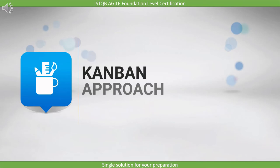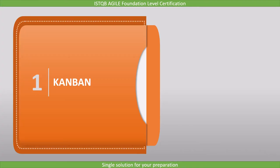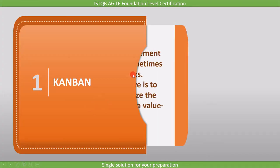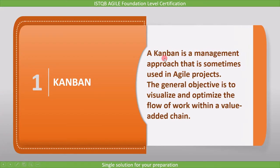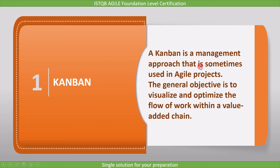In this lecture, we will cover Kanban, which is the third management approach of Agile projects. A Kanban is a management approach that is sometimes used in Agile projects. The general objective is to visualize and optimize the flow of work within a value-added chain.